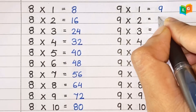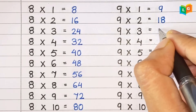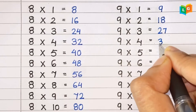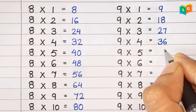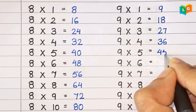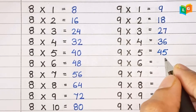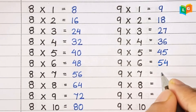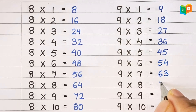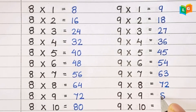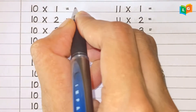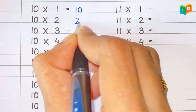Let's see table of 9. 9 1s are 9, 9 2s are 18, 9 3s are 27, 9 4s are 36, 9 5s are 45, 9 6s are 54, 9 7s are 63, 9 8s are 72, 9 9s are 81 and 9 10s are 90.